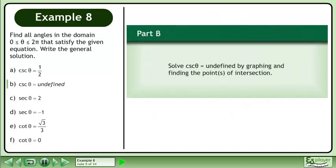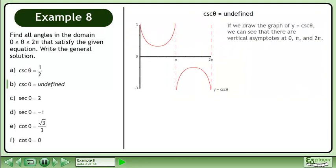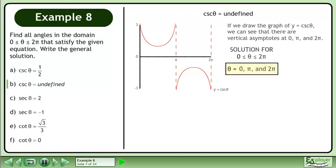In Part B, solve cosecant θ equals undefined by graphing and finding the points of intersection. If we draw the graph of y equals cosecant θ, we can see that there are vertical asymptotes at 0, π, and 2π. The solution for θ between 0 and 2π is 0, π, and 2π.